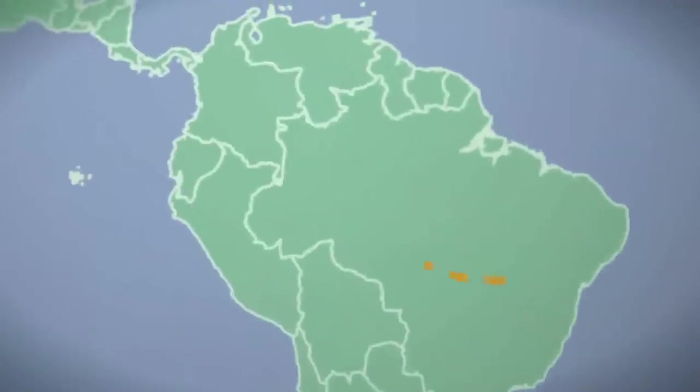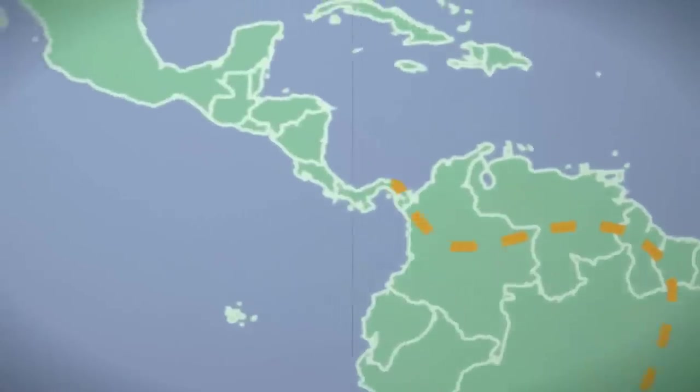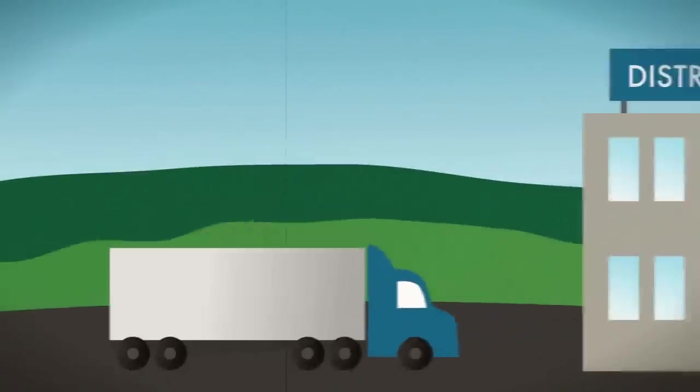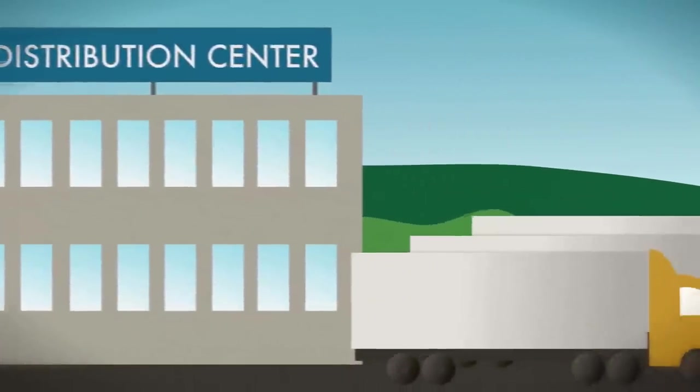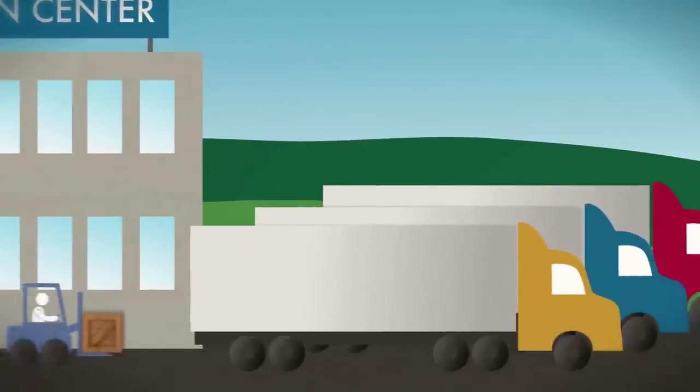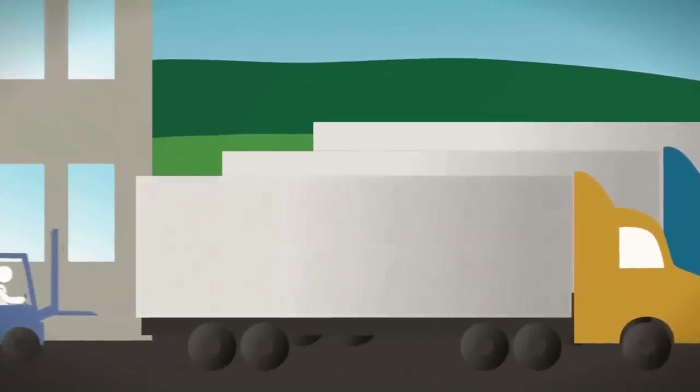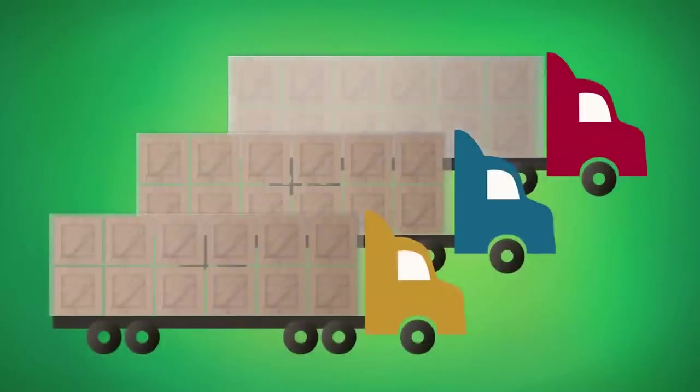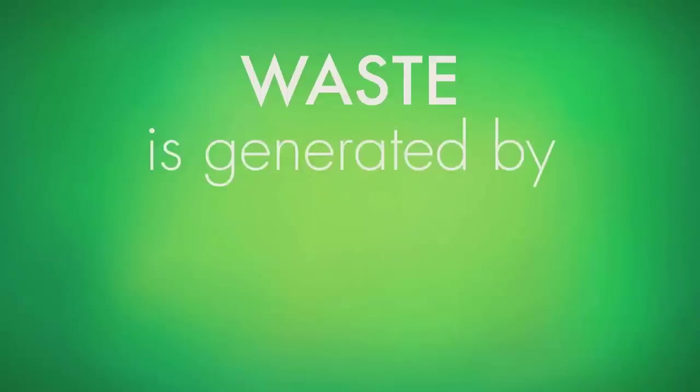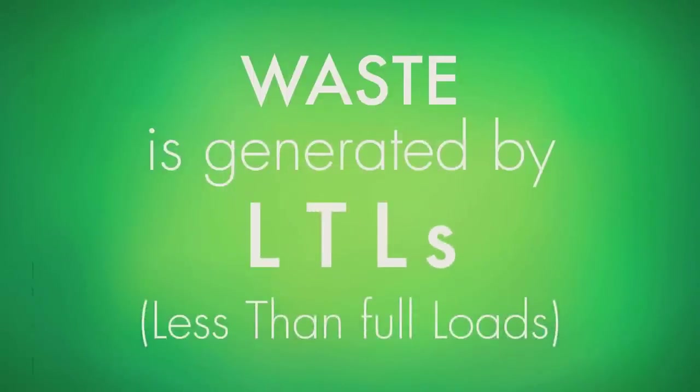The next step is the crate's arrival at a distribution facility, where it is offloaded and stacked with similar products. Depending on the timing of the order, the product may hold at this facility for a short period, or be immediately loaded onto another truck ready for travel. You'll notice that along each step of the journey, each truck is full, maximizing the economies of the shipping process. Waste in the supply chain is generated when we have gaps, or LTLs, less than full loads.